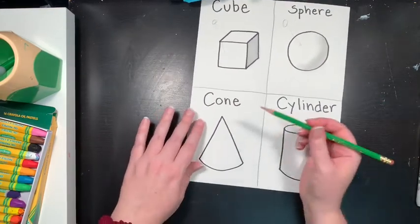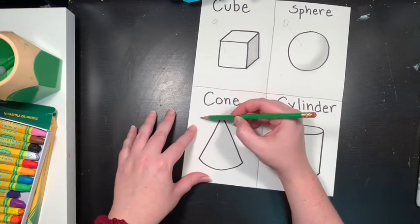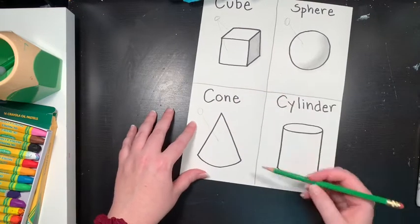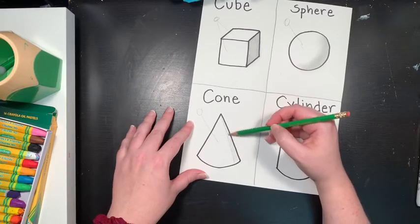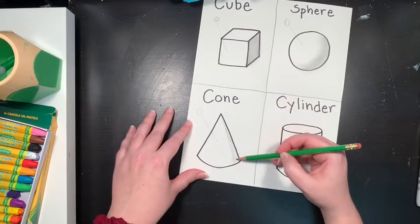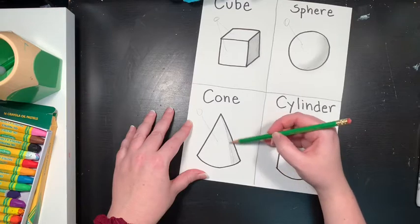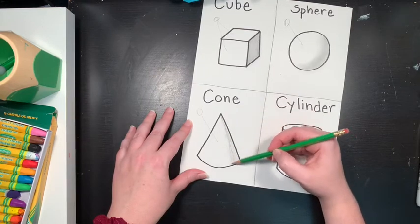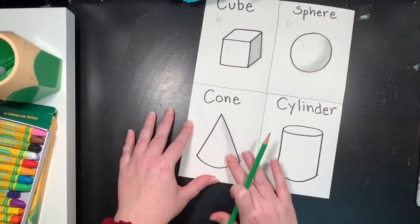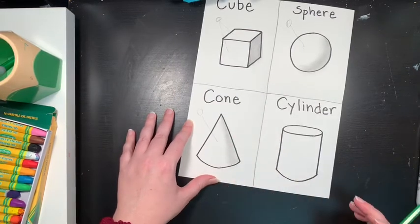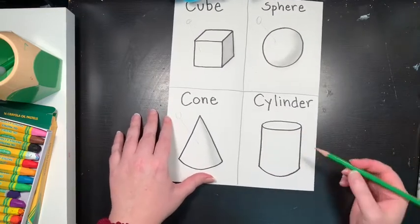Okay. So a cone. Again, let's imagine the sun is shining and it's hitting the cone right there. So we're going to add a shadow over here onto our cone. I'm going to do the same thing. Just smush my pencil lines around. Wow. So cool.